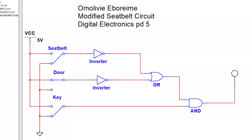Now we have the modified seatbelt alarm circuit. The statement that this circuit goes by is: when the door is open and the key is in the ignition, the buzzer will go off. Or when the key is in the ignition and the seatbelt is not buckled, the buzzer will go off.